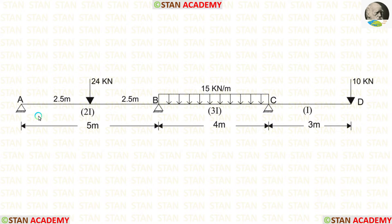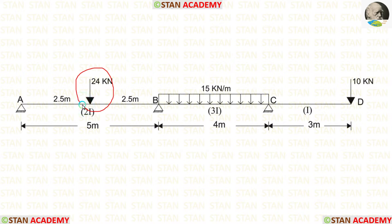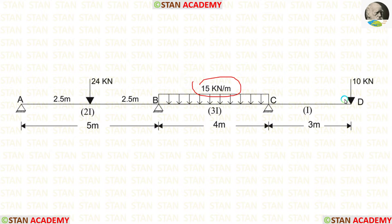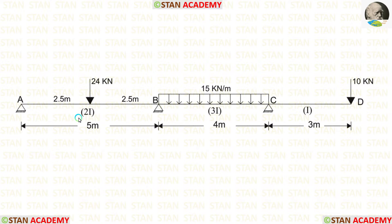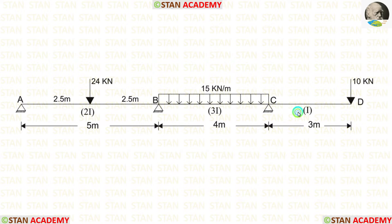In this beam, there are two spans: span AB and span BC. Also, there is an overhanging span CD. In span AB, there is a point load of 24 kN acting at the center. In span BC, there is a uniformly distributed load of 15 kN per meter acting for the full span. In the overhanging span CD, there is a point load of 10 kN acting at point D. The moment of inertia for span AB is 2I, for span BC it is 3I, and for the overhanging span it is I.